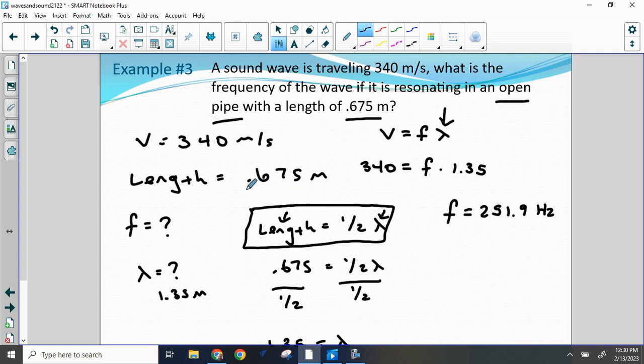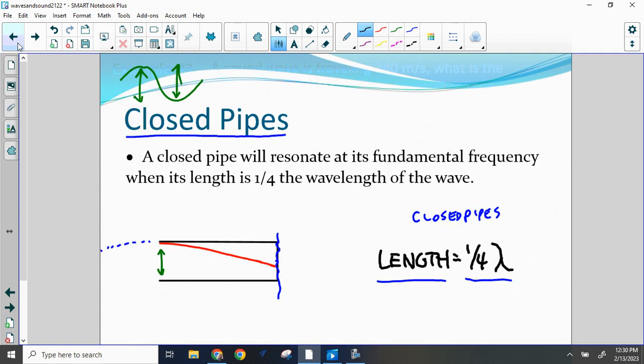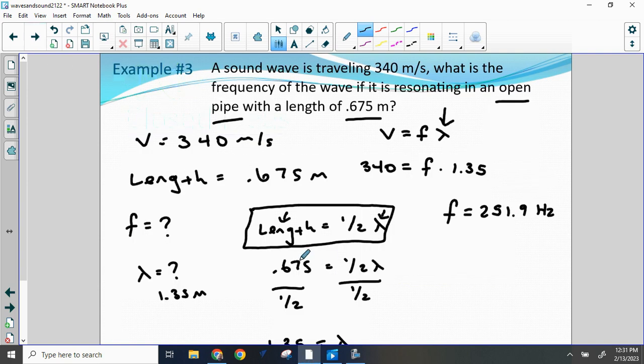If this was a closed pipe, if it says it was a closed pipe, we would do everything the same, except this would not be length equals one-half wavelength. It would be length equals one-fourth wavelength, which would change my answer down here and my wavelength here and my frequency there.